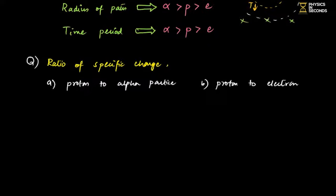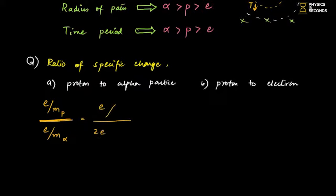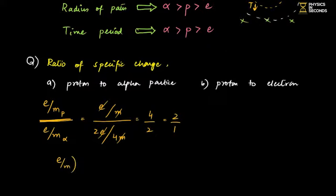For proton to alpha: (e/m)_proton / (e/m)_alpha. Proton charge = e, alpha charge = 2e; proton mass = m, alpha mass = 4m. After cancellation: 4/2 = 2:1. So the Charge to Mass Ratio of a proton is double that of an alpha particle.